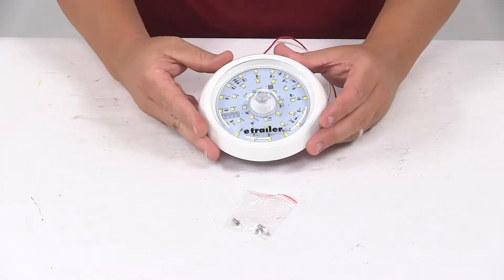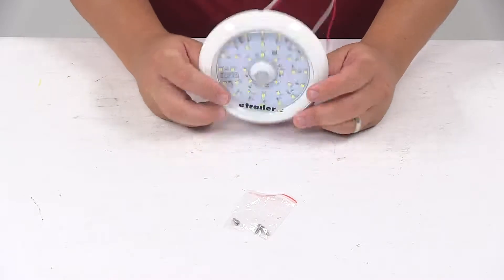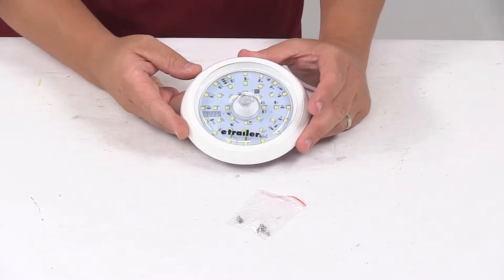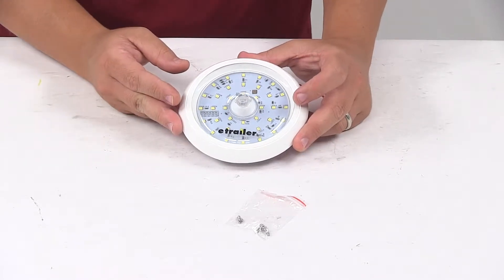Today we're taking a look at an LED dome light with a motion sensor. This light has 36 bright LEDs and 2200 lumens for superior brightness. It would be great for your RV or enclosed trailer.